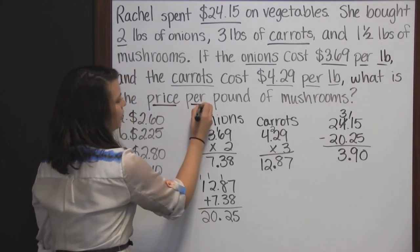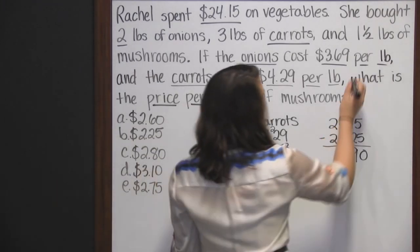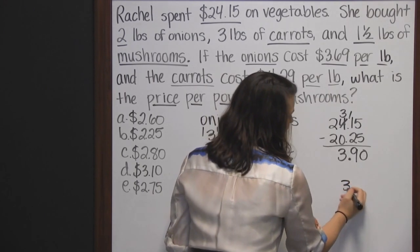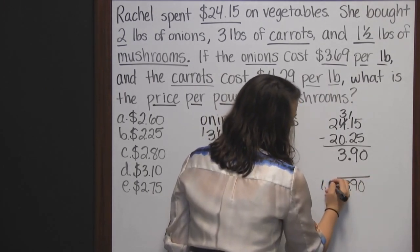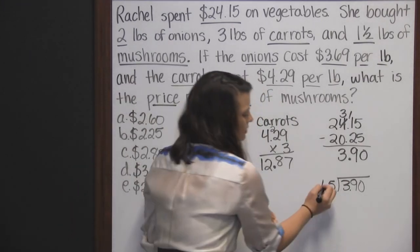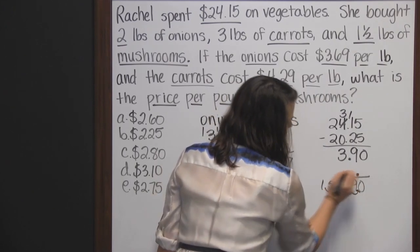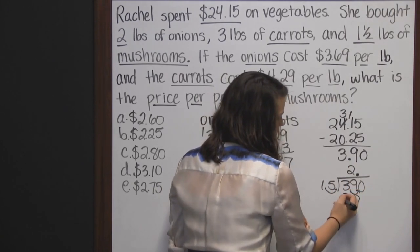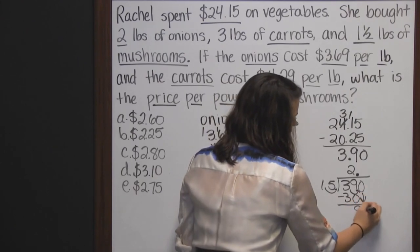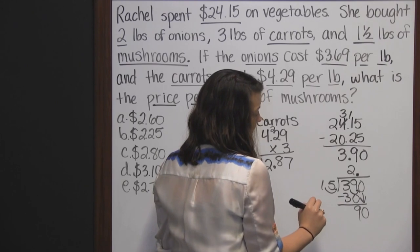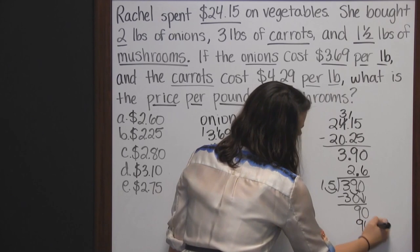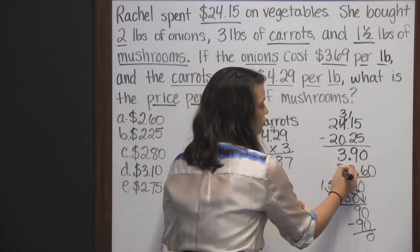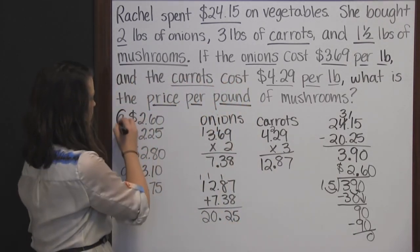But what we need to know is the price per pound. She bought one and a half pounds of mushrooms. So we take the total amount spent on mushrooms, $3.90, and divide by 1.5 — one and five tenths. We move the decimal one place in both numbers, so 15 goes into 39 two times. 15 times 2 is 30. Subtract and get 9. Bring down the zero — 15 goes into 90 six times. 15 times 6 is 90, subtract and get zero. So the mushrooms were two dollars and sixty cents per pound — answer A.